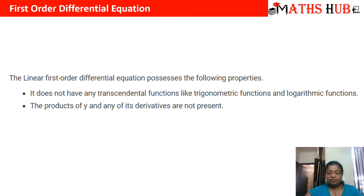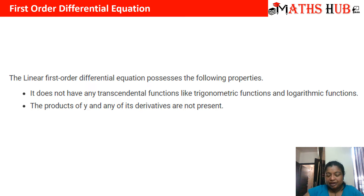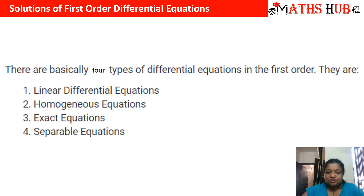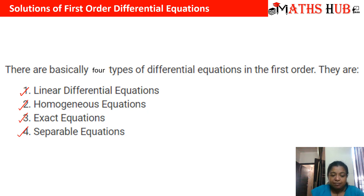In a first order differential equation, the order is one. The linear first order differential equation possesses the following properties: it does not have any transcendental functions like trigonometric or logarithmic functions, and products of y and its derivatives are not present. When we say linear, the terms like dy/dx and y should not be in product form, and all transcendental functions should not be there. There are basically four types of first order differential equations: linear, homogeneous, exact, and separable equations.